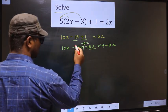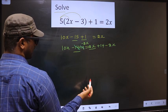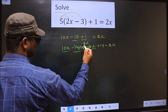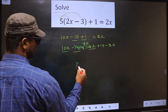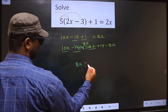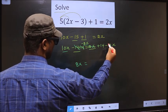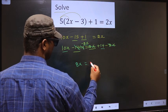Now minus 14 plus 14 cancel out. 10x minus 2x will result in 8x equal to plus 2x minus 2x cancel out, you are left with 14.